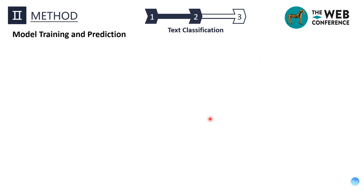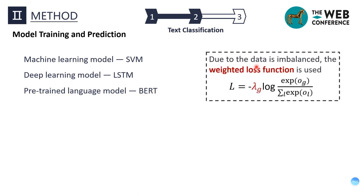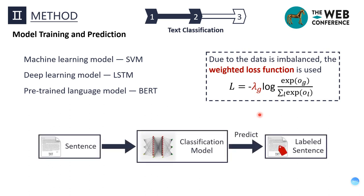After the corpus was constructed, we trained and predicted with the model. We selected three models: the machine learning model SVM, the deep learning model LSTM, and the pre-trained language model BERT. We also use a weighted loss function to obtain better text classification results because of the data imbalance problem. Lambda indicates the number of various labels. After training, each sentence from the privacy policy can be classified into one of the labels.